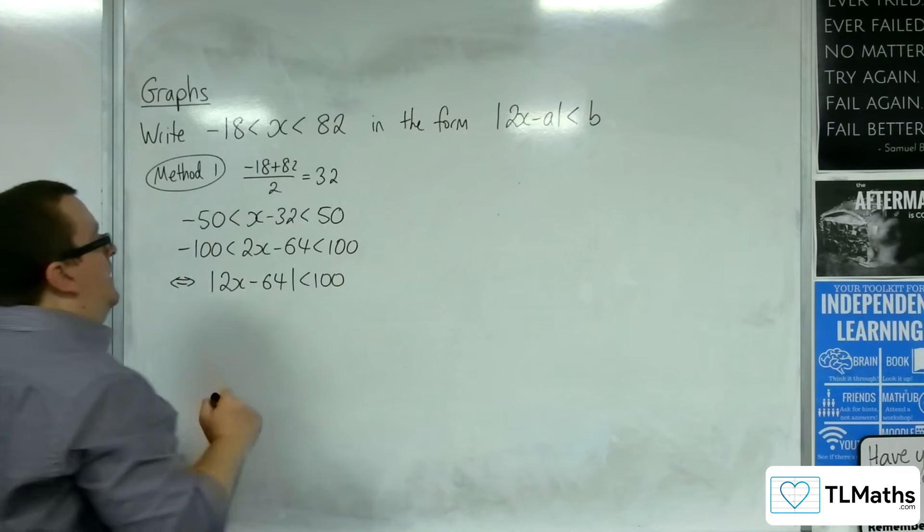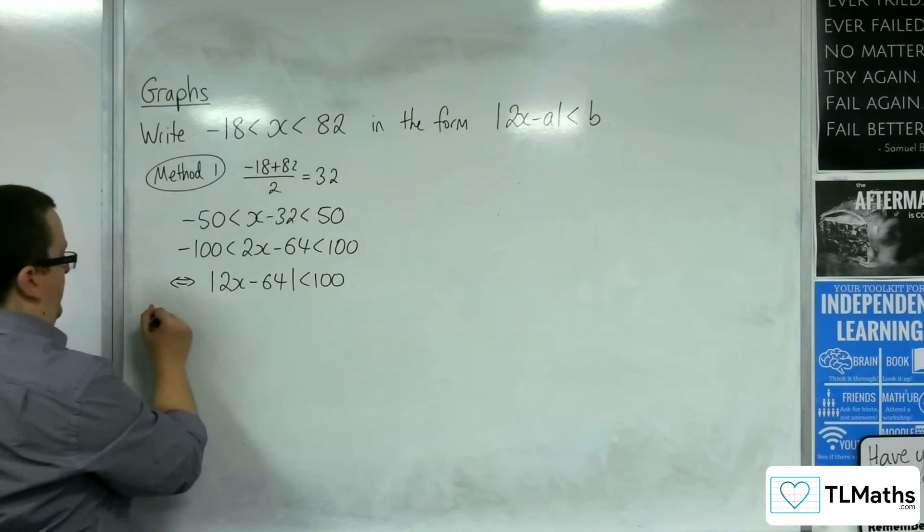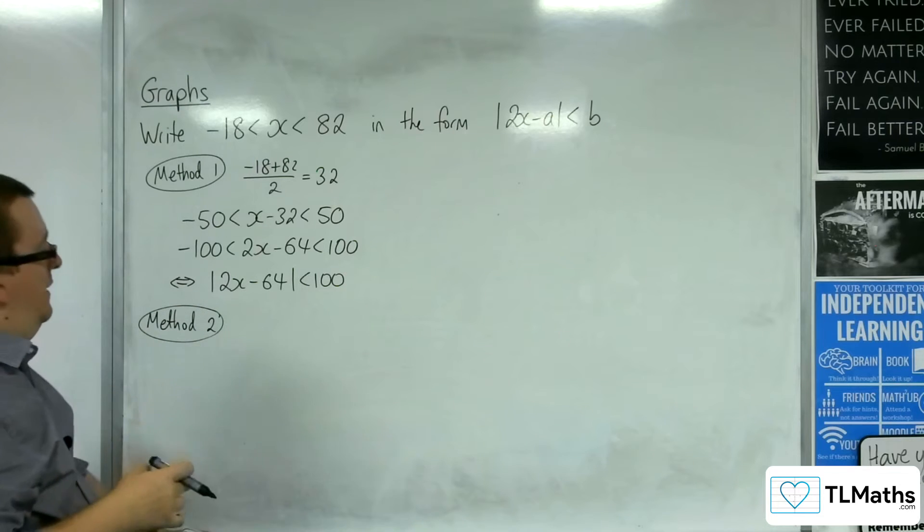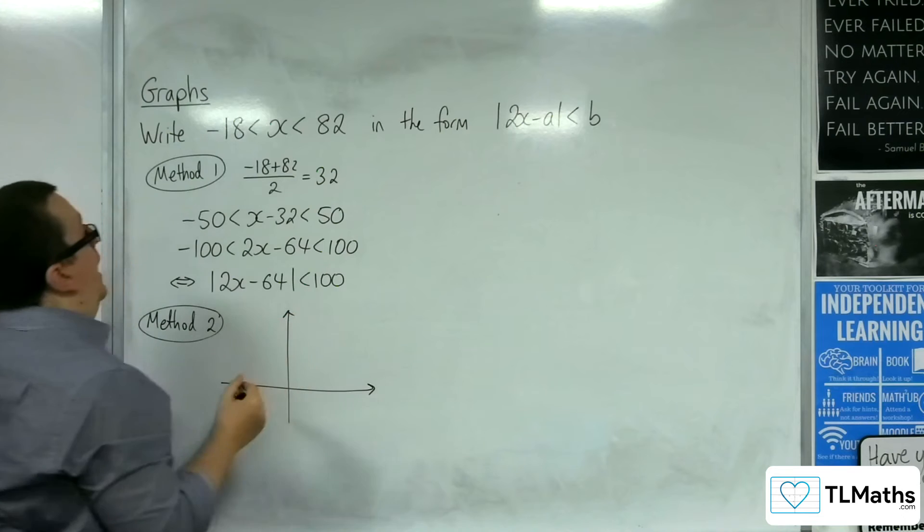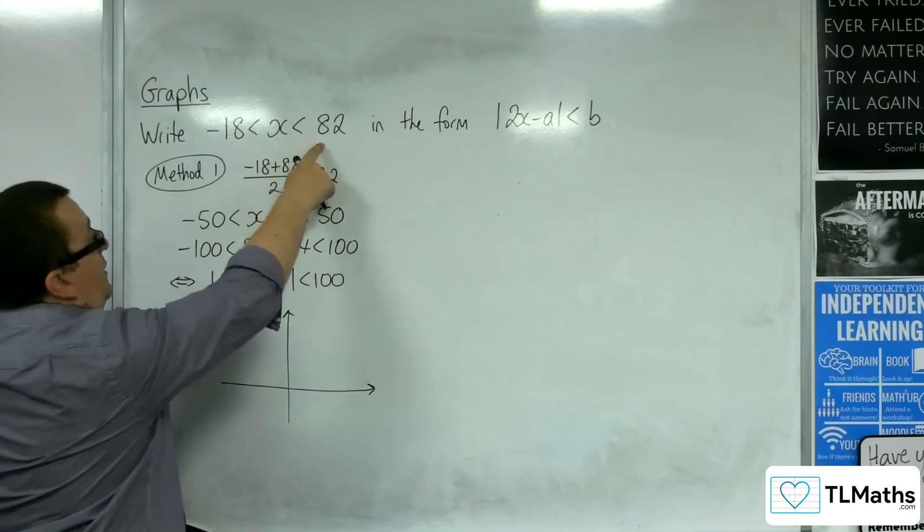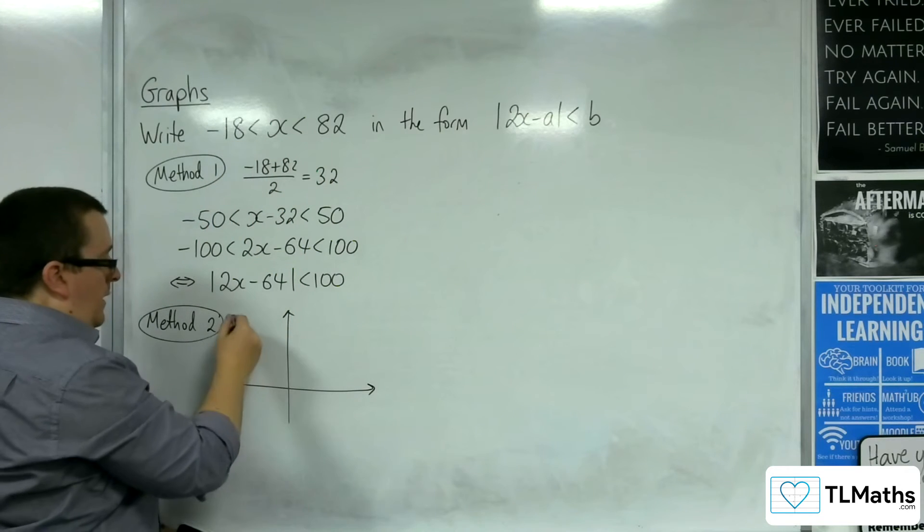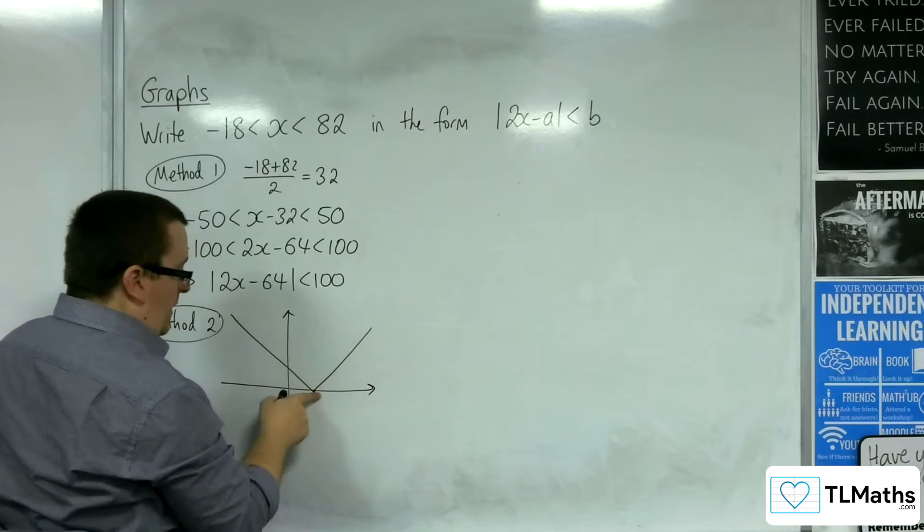Let's now try method number 2. Method number 2 was going to be a graphical method. So, this idea that my two x-value solutions are -18 and 82, and I've got this modulus graph coming in.